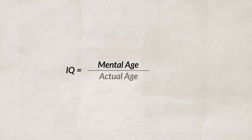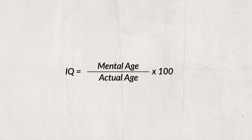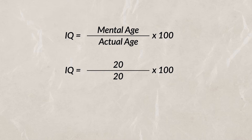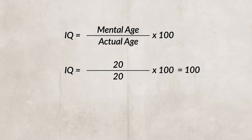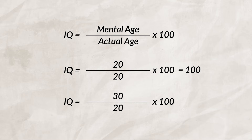IQ was created by William Stern, who took the mental age of individuals and divided it by their actual age and multiplied it by 100. For example, if you have a mental age of 20 and you're 20 years old, your IQ score would be 100. But if you have a mental age of a 30-year-old and you're 20, your IQ score would be 150. The IQ score works okay for children, but it's not the best at representing intelligence for adults, and most tests no longer use the original formula.